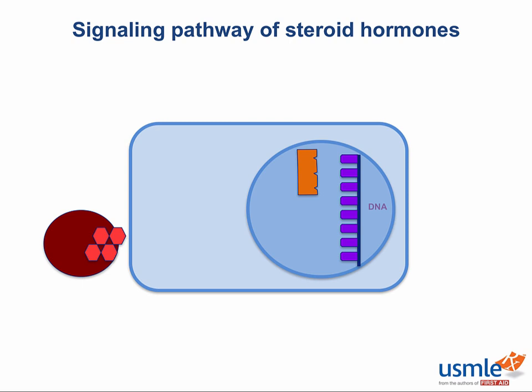For most of these lipophilic hormones, the steroid reaches the cell, tells the binding globulin thanks for the ride, and hops off the protein to passively diffuse into the cell. Unless, of course, you're a thyroid binding globulin, in which case you have to be actively transported in.